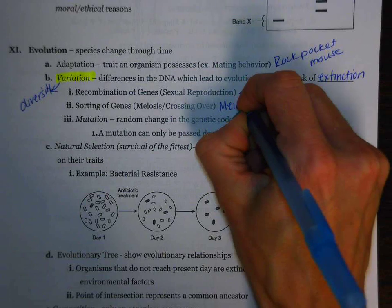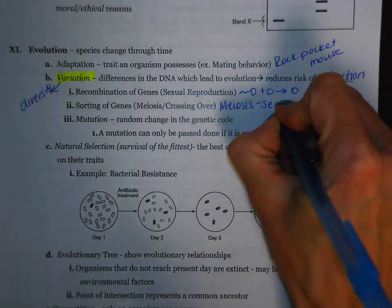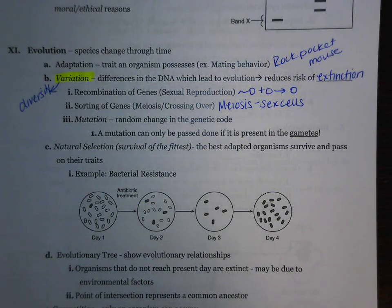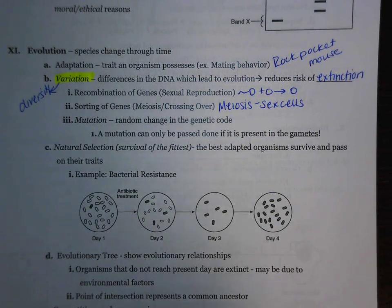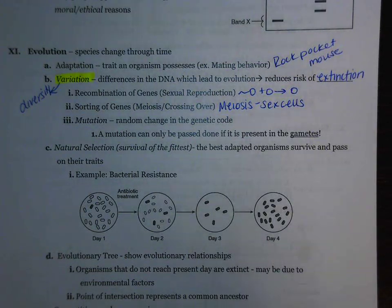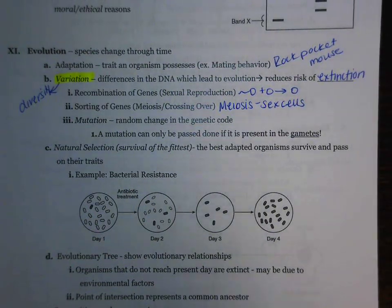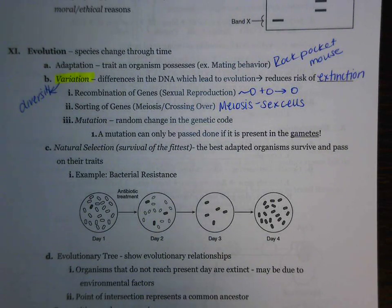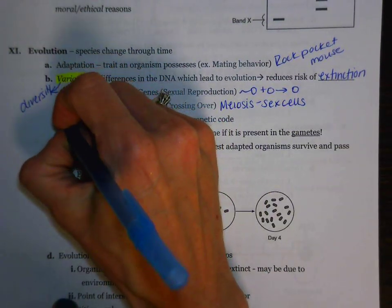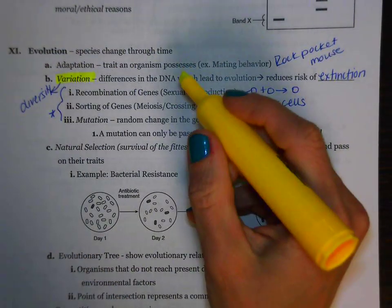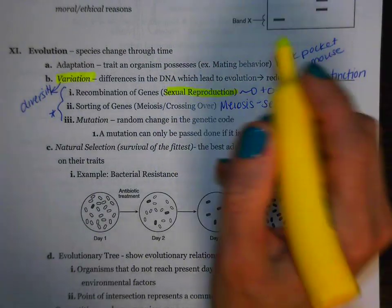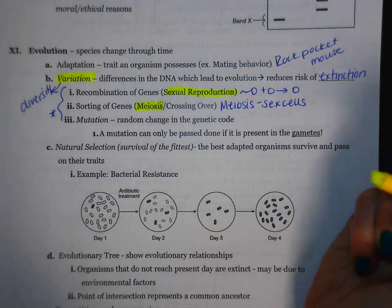Remember, meiosis is referring to the formation of sex cells. These sex cells have half the normal number of chromosomes. Sex cells include sperm and egg. Finally, the one that applies to all living things, whether it be sexual reproduction or asexual reproduction, is mutation. Mutation is a random change in the genetic code. The genetic code is referring to those four molecular bases: A, T, C, and G. So variation is caused by these three ideas: recombination of genes, which we can refer to as sexual reproduction; meiosis, which is the making of sex cells; and finally, mutation.